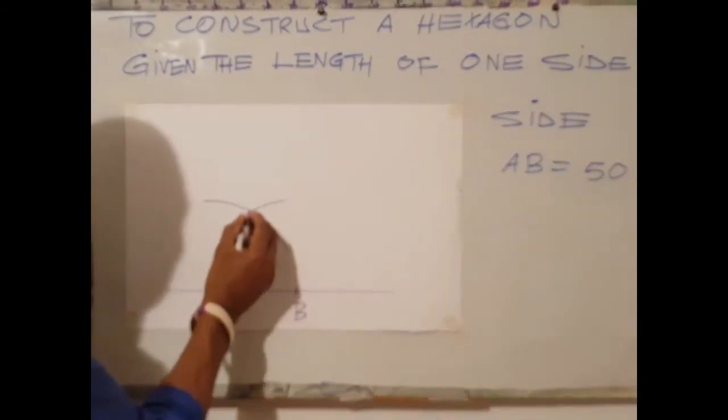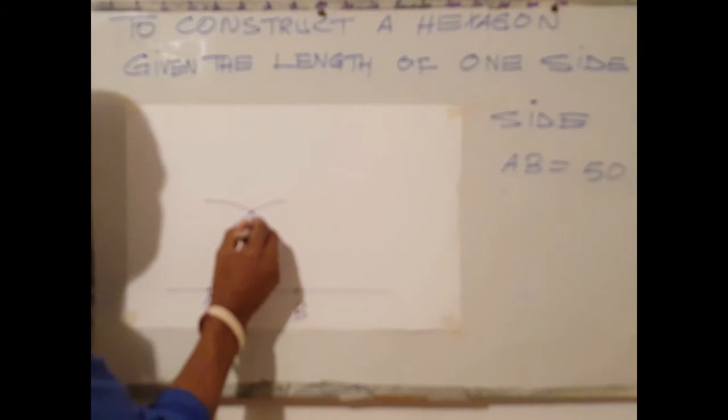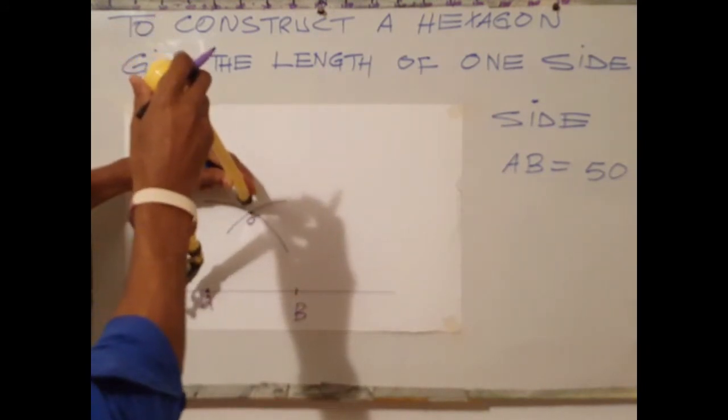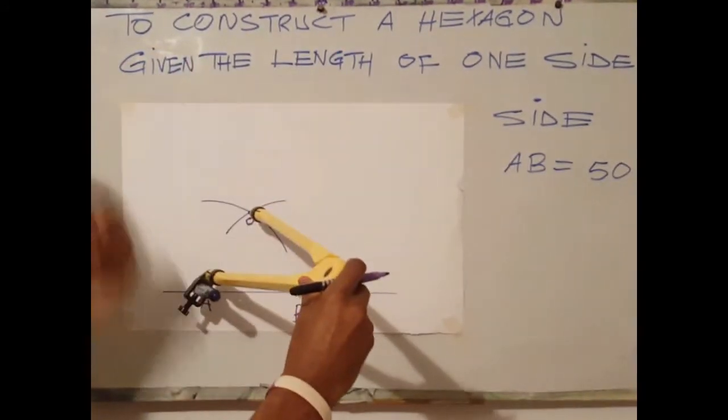At the point where both arcs meet, label that point O. With O as center, place the compass at point O.